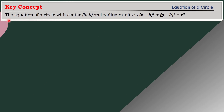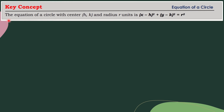If you could still remember, the equation of a circle with center h, k, and radius r units is denoted by this equation. So the quantity of x minus h squared plus the quantity of y minus k squared is equal to r squared.